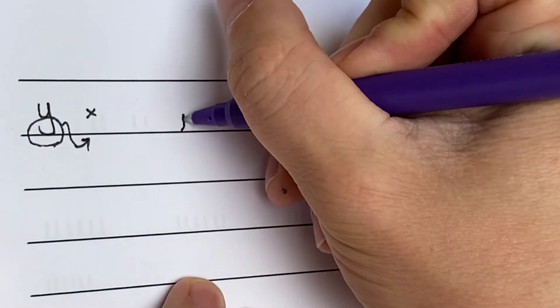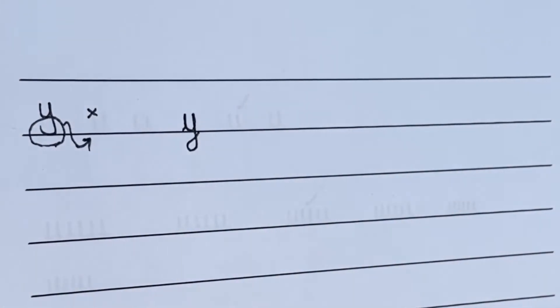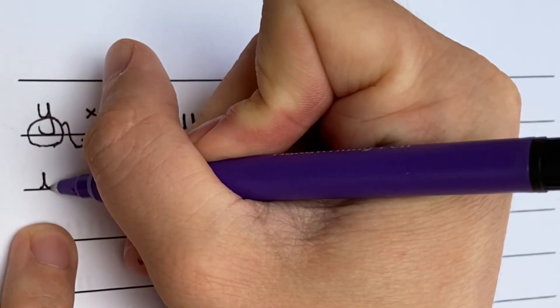So we go up, down, round, up, down and under, loop and hook. Now have a go at doing six letter Ys or more if we feel we need the practice.